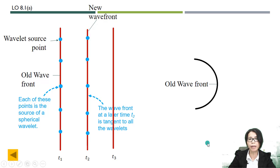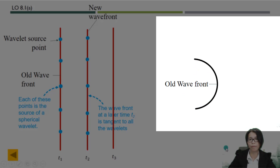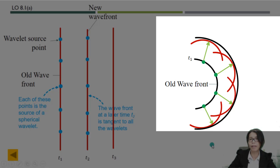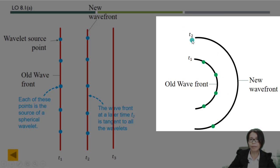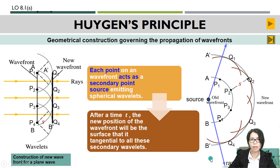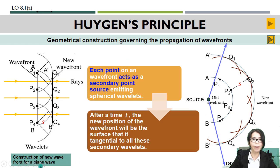The same principle can be applied to spherical wave fronts. Each point on the spherical wave front will emit new spherical wave fronts, and when you draw a tangent line that connects all the points which are in phase, you have your new wave front at time T2. So to summarize: we use Huygens' Principle to construct the new wave front for a plane wave and also for a circular wave.